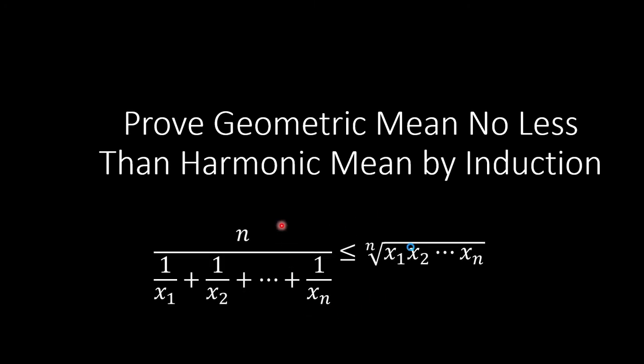Given n numbers x1 to xn, n divided by the sum of reciprocals of each is less than or equal to the nth root of the product of the n numbers.